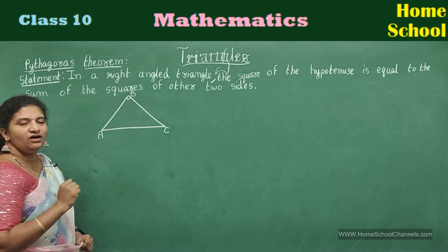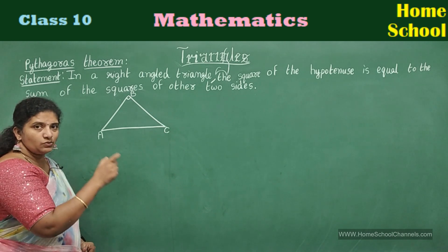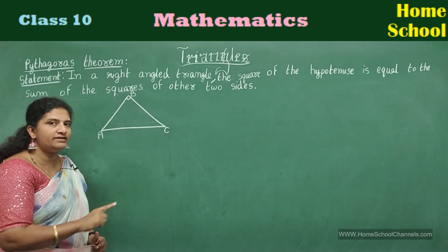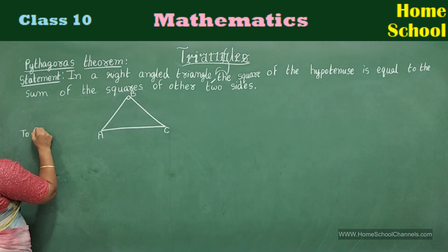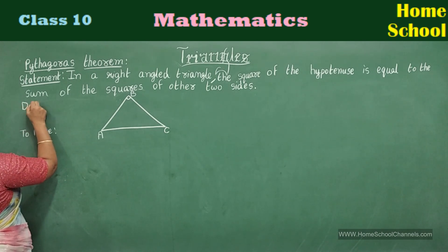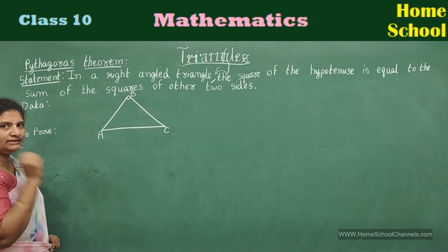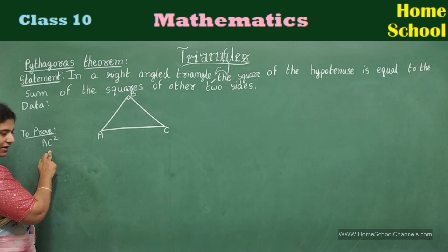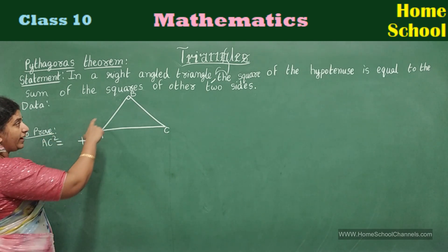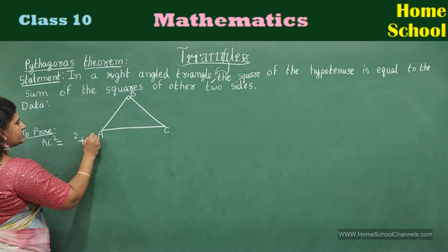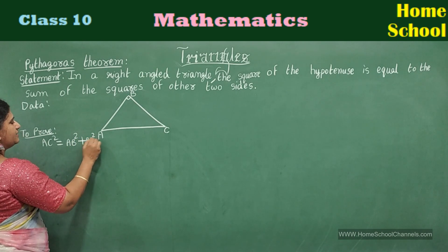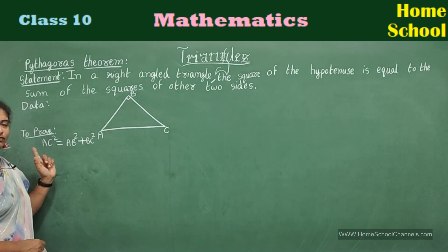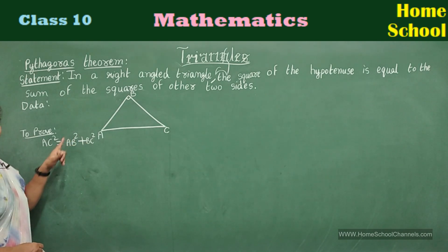Now identify in this triangle where the hypotenuse is. AC is the hypotenuse. The square of the hypotenuse is equal to the sum of the squares of the other two sides. Repeat the statement along with me: in a right angled triangle, the square of the hypotenuse is equal to the sum of the squares of the other two sides.